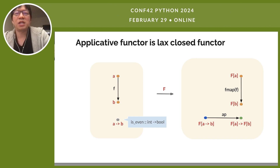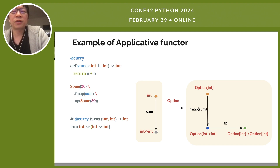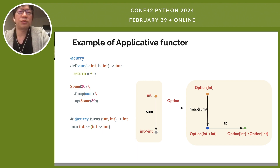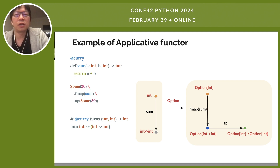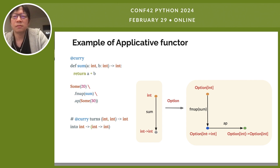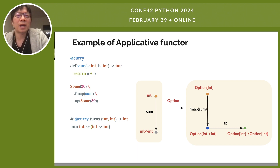That's a lot of theory. Let's see an example in code. Here, we have a curried function for summing two integers. Currying means if a function takes multiple arguments, then the curried function will take one argument at a time. In this example, we start with some of 20, then we fmap the curried function over it. What we end up with is an option of int to int, which is shown as the blue dot in the diagram. Because our option functor is an applicative functor, we have the app arrow that takes us from the blue dot to the green dot. The green dot is essentially a function that takes an option of int and returns another option of int. So if we give that function some of 30, we will get back some of 50 as the result.